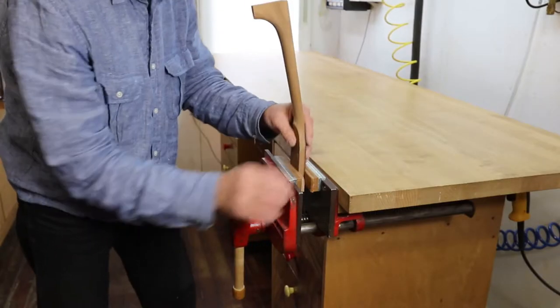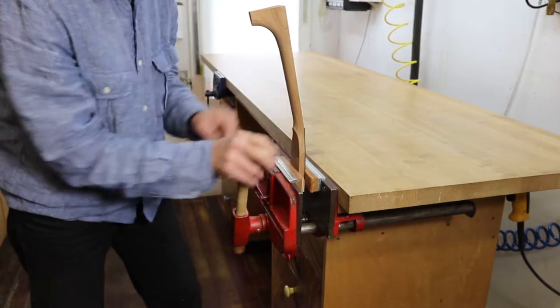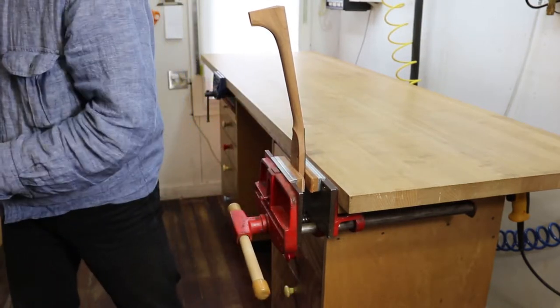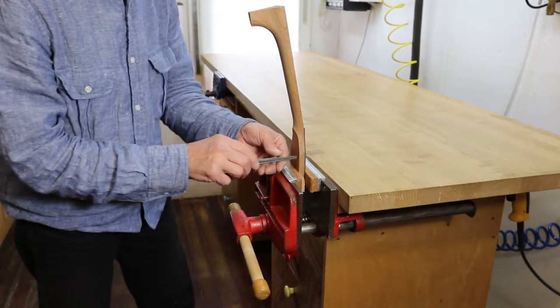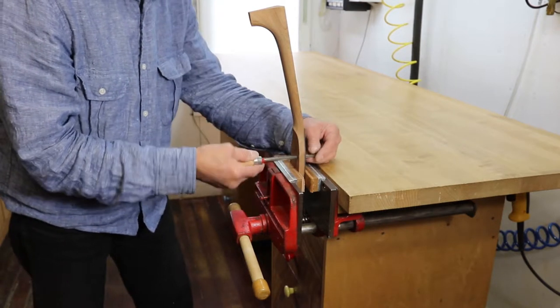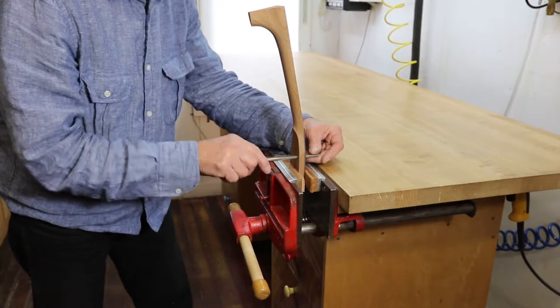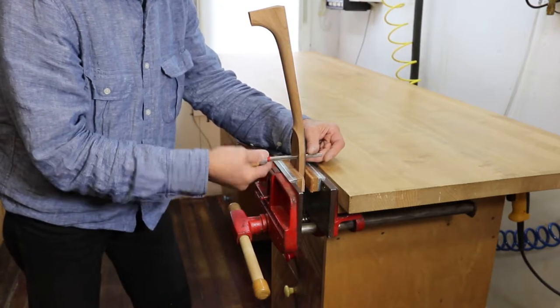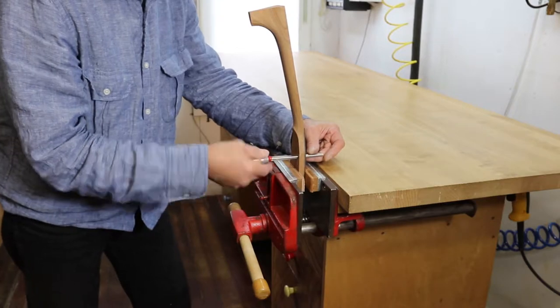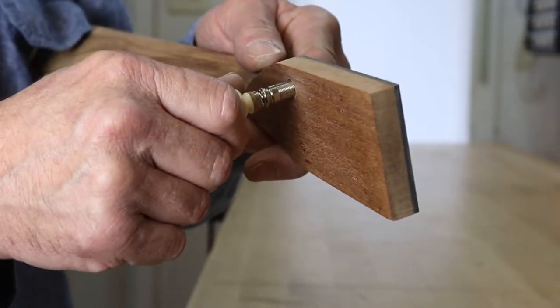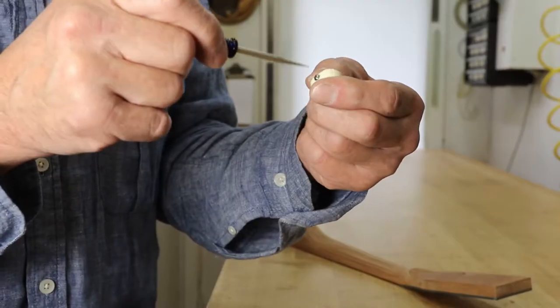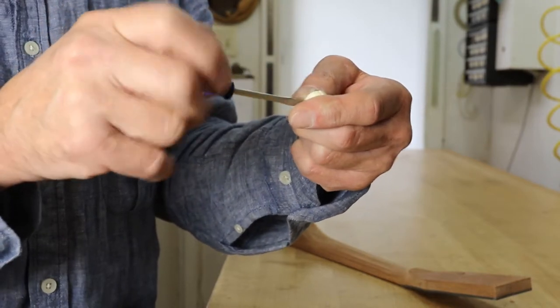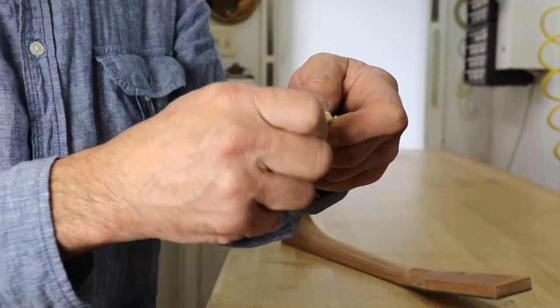I clamp the neck into a vise so I can keep the reamer square and perpendicular to the work. You'll want to ream slowly and creep up to your final hole size in a couple of steps. Initially ream until about a third of the threaded part of the peg will easily fit into the hole, and take off the brittle ivory buttons so you don't break them as you wind the tuners in with a pair of pliers.